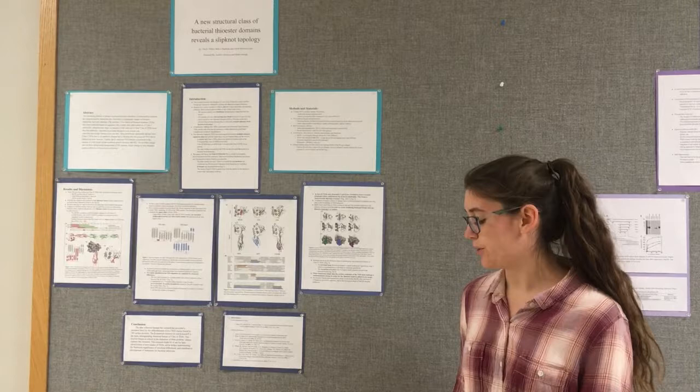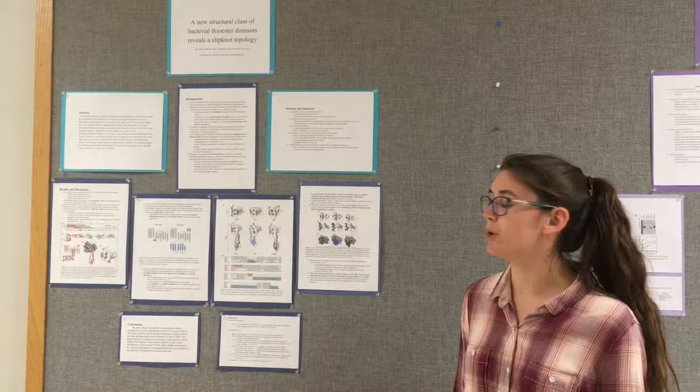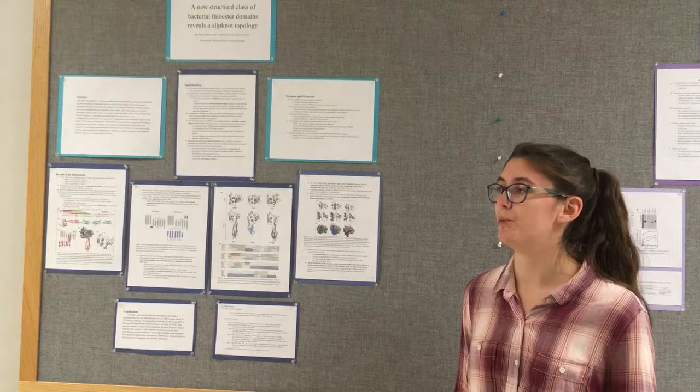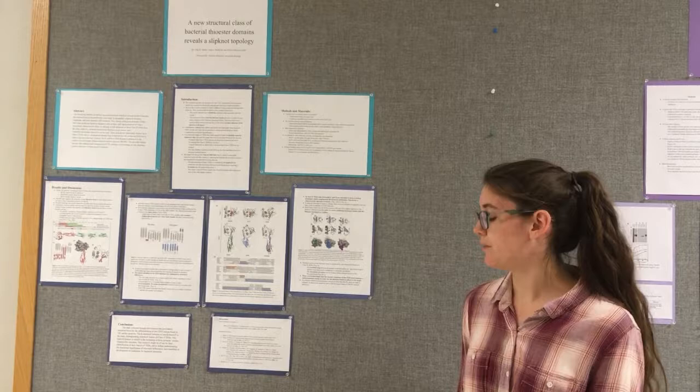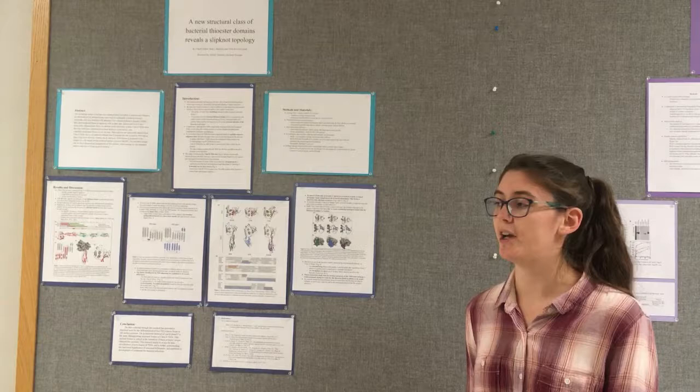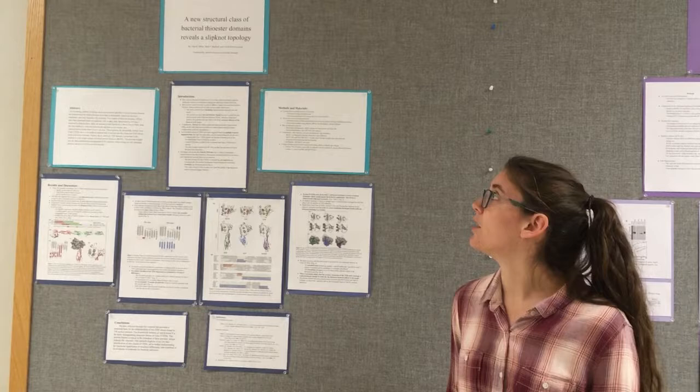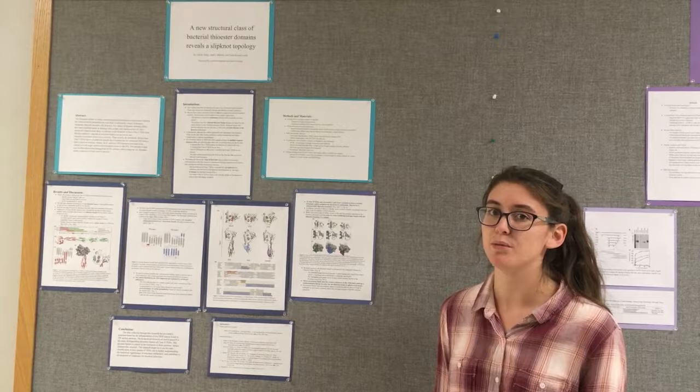In prior research, scientists determined through multiple sequence alignment that there are two classes of TEDs: class 1 and class 2. They determined this because their primary sequences fell within two classes. For this study, the researchers are trying to show a three-dimensional structure that supports the differences in primary structure. They are determining the three-dimensional structure of class 2 TED proteins because class 1 has already been determined.